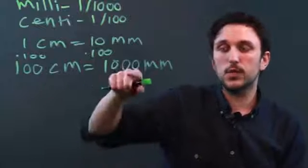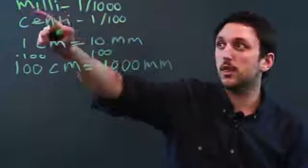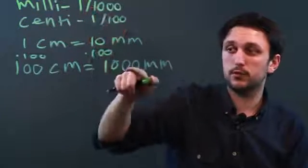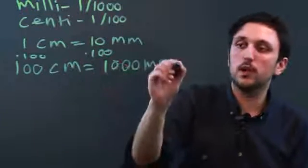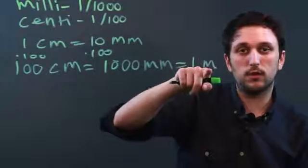So 100 centimeters equals 1,000 millimeters. Now, we said centi is one one-hundredth, and milli is one one-thousandth, so we have our thousand, we have our hundred. So both of these are actually equal to one meter, which is also known as the base.